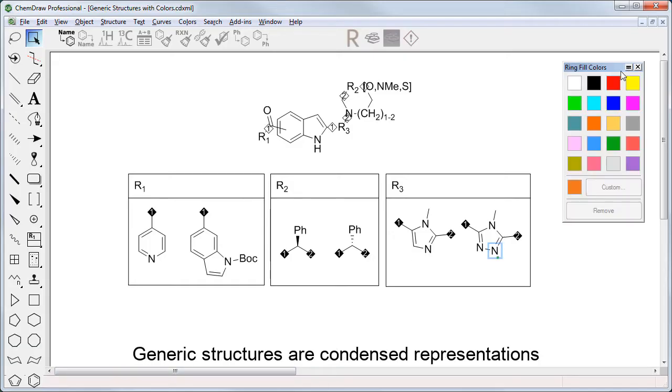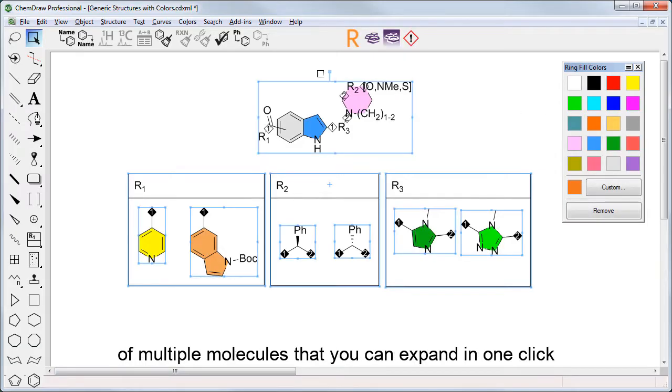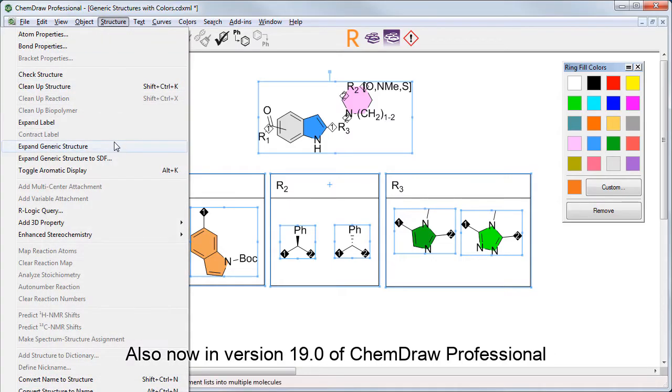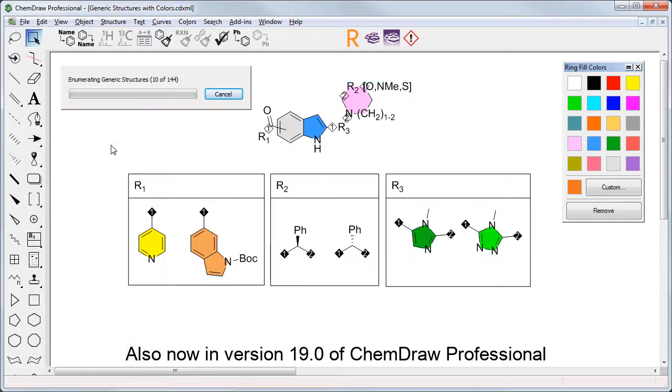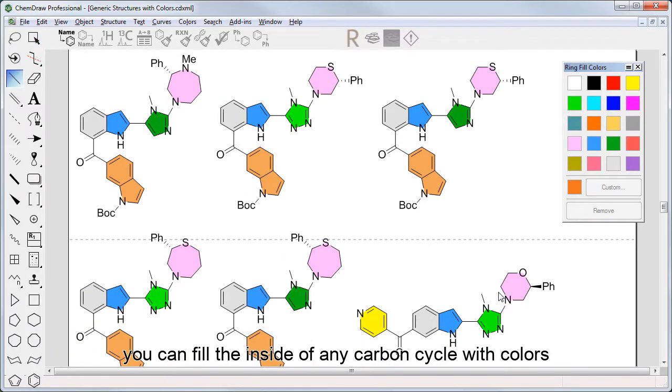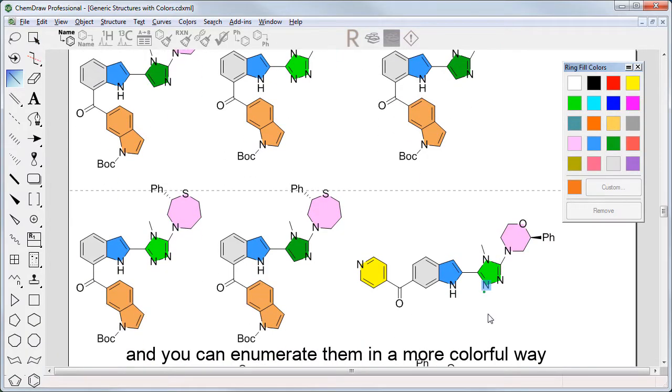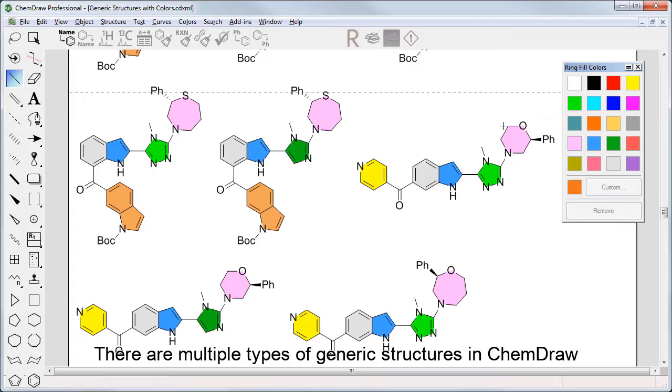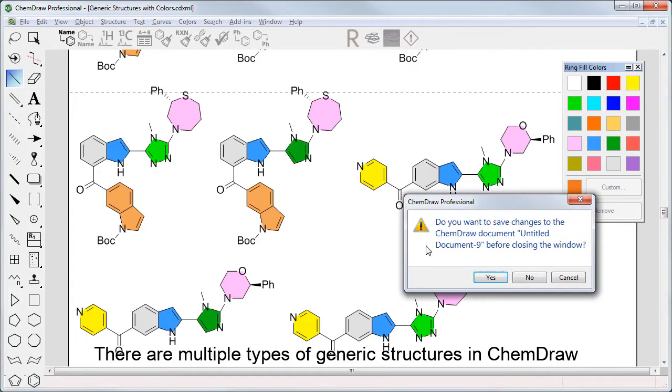Generic structures are condensed representations of multiple molecules that you can expand in one click. Also now in version 19 of ChemDraw Professional, you can fill the inside of any carbon cycle with colors and enumerate them in a more colorful way. There are multiple types of generic structures in ChemDraw, so let's start with the atom list.